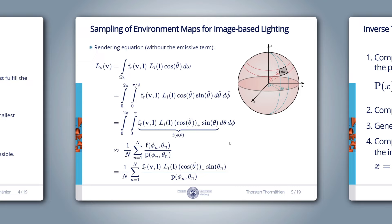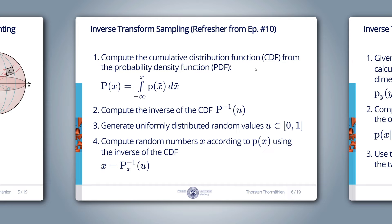Now we use importance sampling to solve this integral. The integrand f(phi, theta) is BRDF f_r times incoming radiance Li times cosine-theta-hat times sine theta. We approximate the integral with the importance sampling sum, and we can freely choose our PDF p(phi, theta). Today, we want to choose our PDF to follow the incoming radiance function Li.